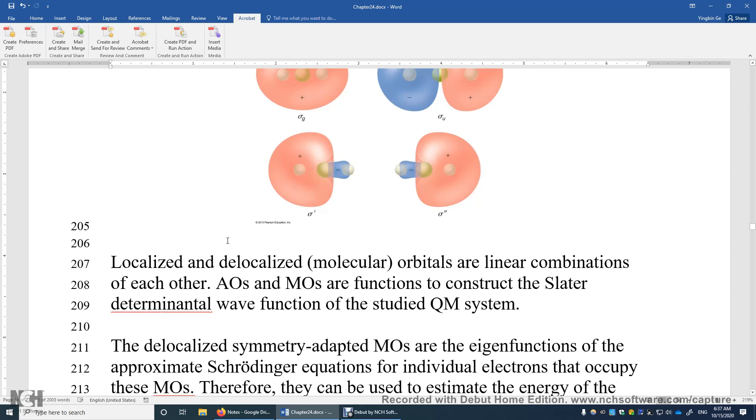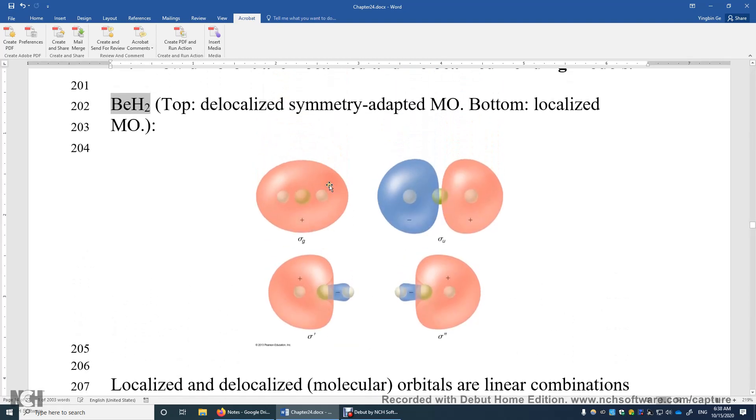However, if you take the squared modulus of the total wave function of all electrons, that will give you the electron density distribution. So basically, you need to construct a determinantal wave function of all the valence electrons. And then take the squared modulus of it. You will get the electron density. And you can use this delocalized MO or localized MO. You will end up with the same electron density distribution.